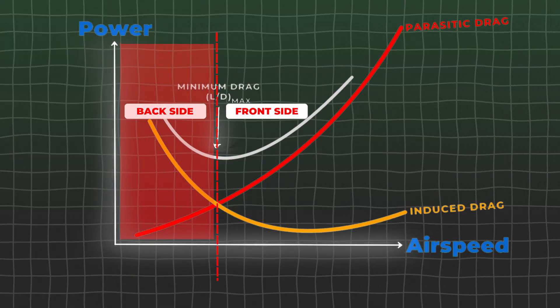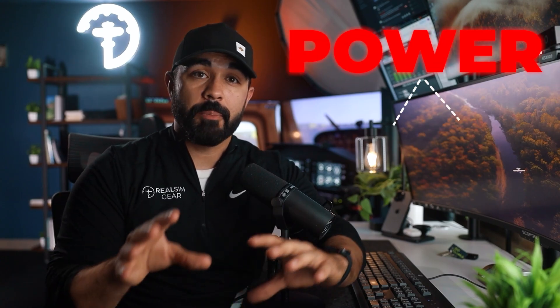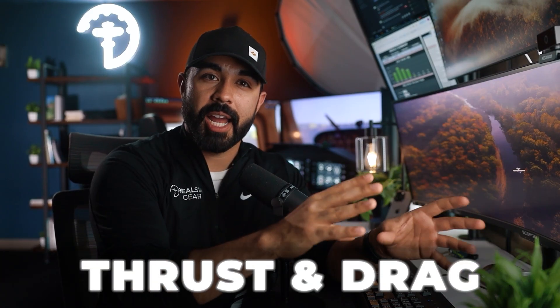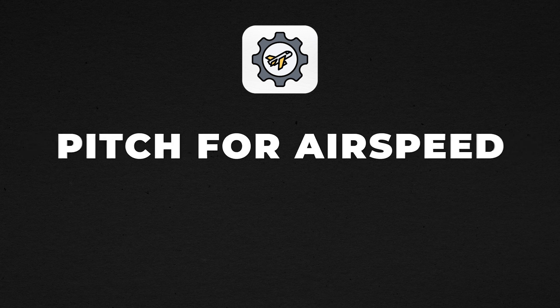The point is, even on the backside of the power curve, pitch affects both airspeed and altitude, and power affects both airspeed and altitude too — because power is one of two factors that add total energy into the system, along with drag. So I still want you to use pitch for airspeed and power for altitude. Just keep in mind you're affecting both types of energies by manipulating the elevator or the throttle.